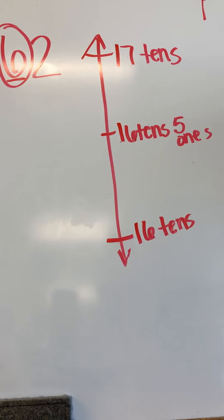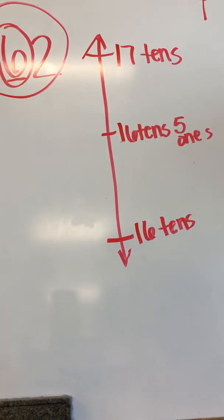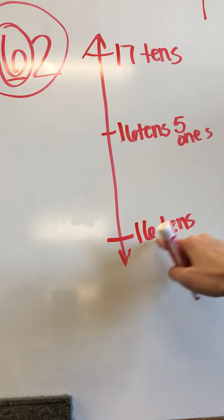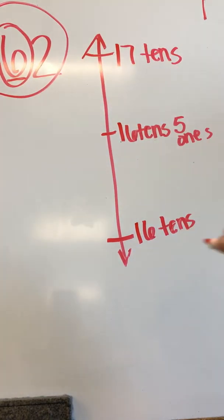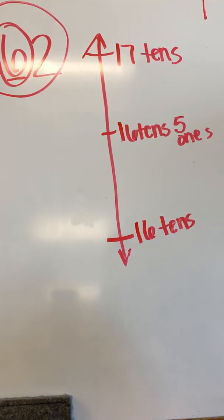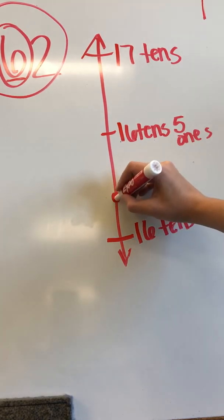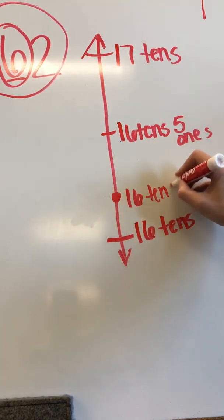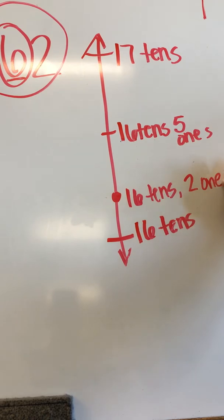Now what we need to do is plot where is 162 on our number line. Let's see, 16 tens. This is 16 tens, 2 ones. So 16 tens, 2 ones would be here. 16 tens, 2 ones.